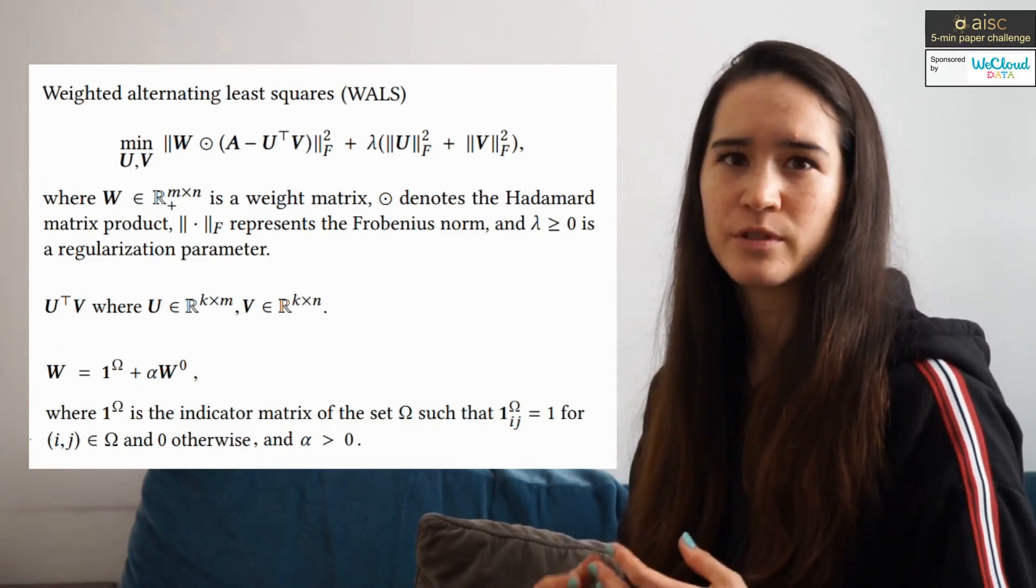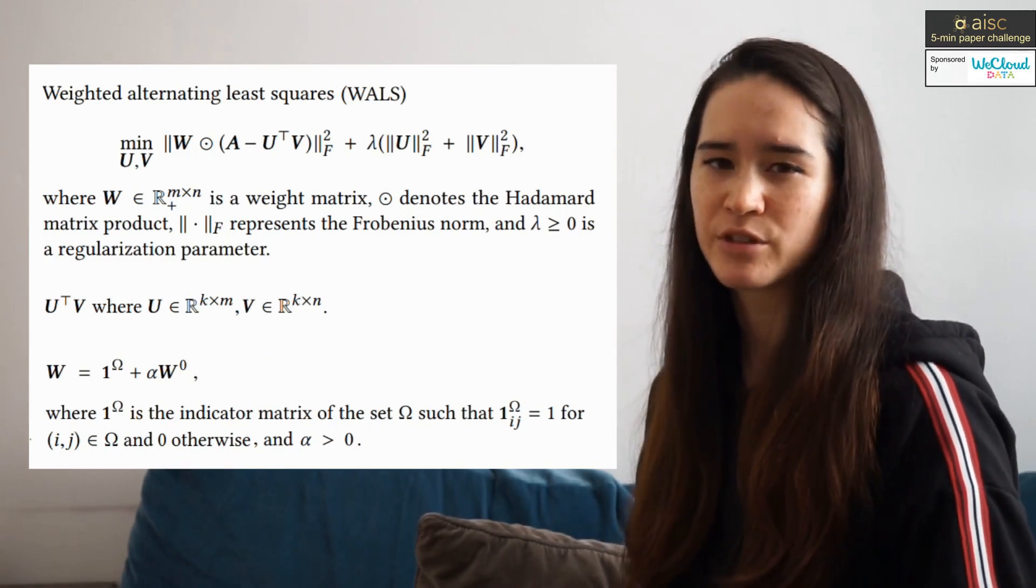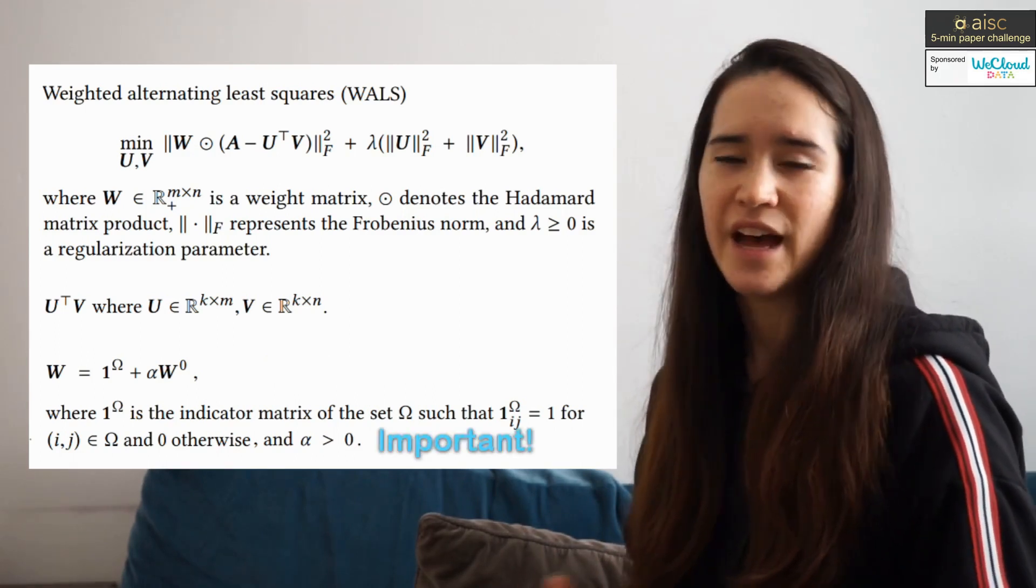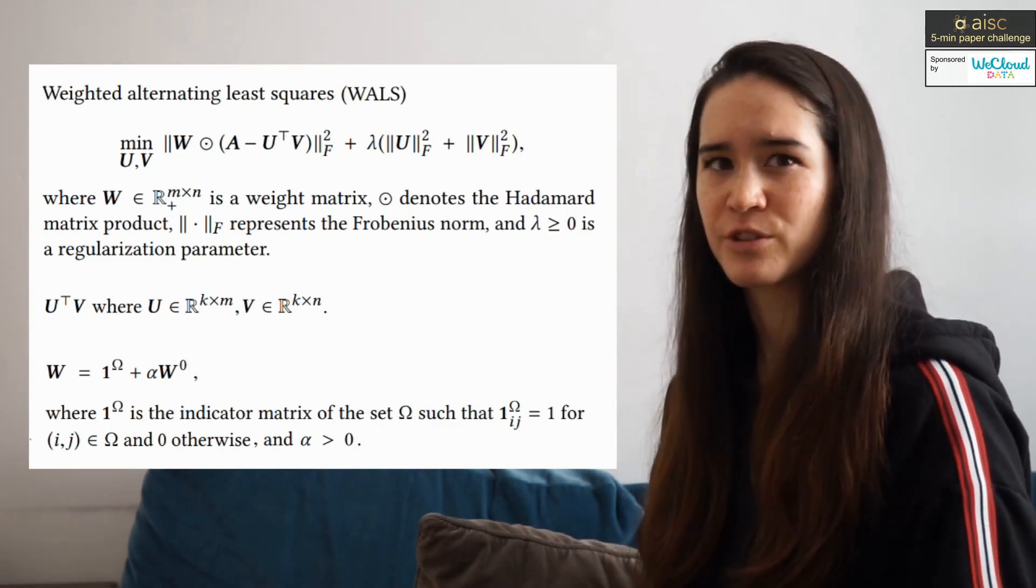A common choice for the weight matrix W involves attributing a small uniform weight to all unobserved data as shown here. Alpha is a meta-parameter that controls the importance of unobserved user-item pairs.